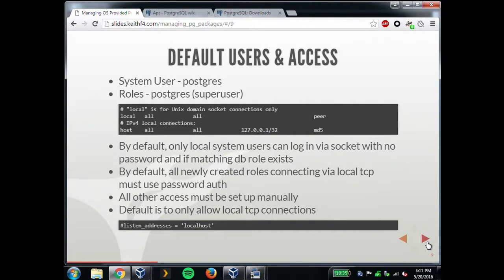When you first set up the default system, it makes a postgres system user and a role in the database called postgres. The default pg_hba.conf is different from the PostgreSQL default — only local socket connections are set up, where the username must match the role in the database. Any TCP connections require a password. This is probably one of the better defaults because it's a much more secure setup. Any remote access has to be set up manually, and by default only local TCP connections are allowed, so you have to uncomment and set the listen_address.